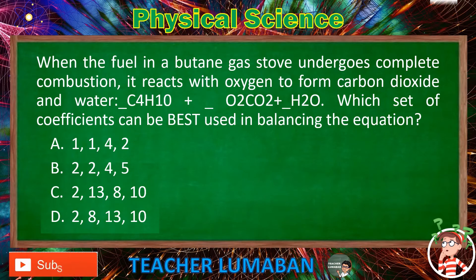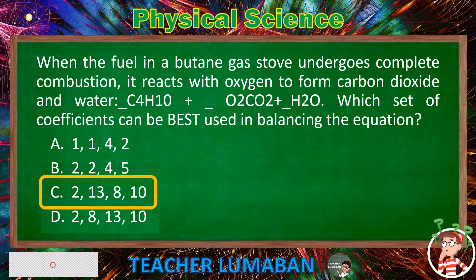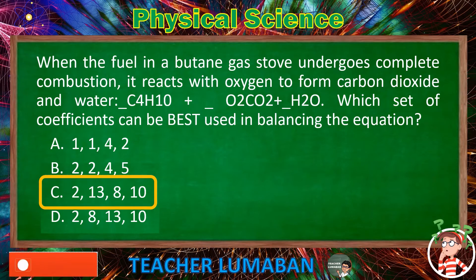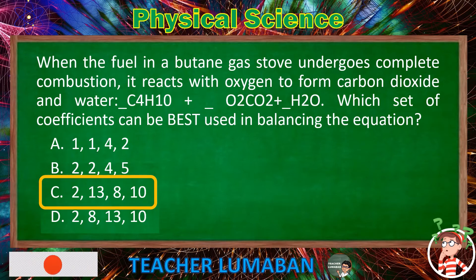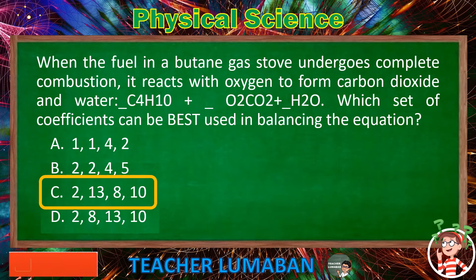The correct answer is Letter C: 2, 13, 8, 10. When the fuel in a butane gas stove undergoes complete combustion, it reacts with oxygen to form carbon dioxide and water: 2C₄H₁₀ + 13O₂ → 8CO₂ + 10H₂O. The coefficients 2, 13, 8, 10 are best used in balancing the equation.